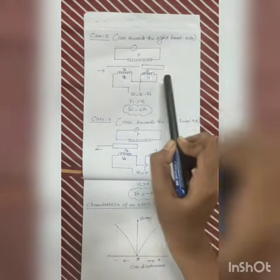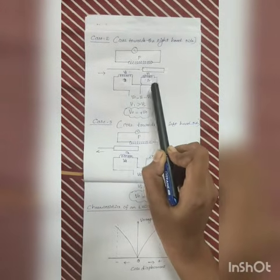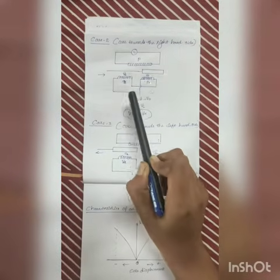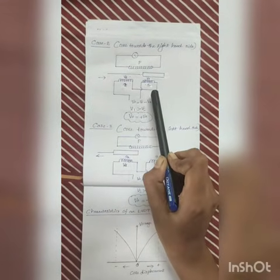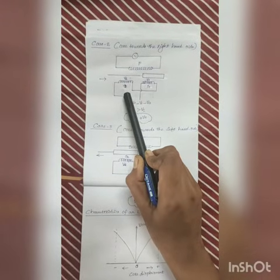In case 2, move the core towards the right. We can see that flux linking with the coil S1 becomes greater than S2. As a result, EMF induced in the coil S1 is greater than EMF induced in coil S2.